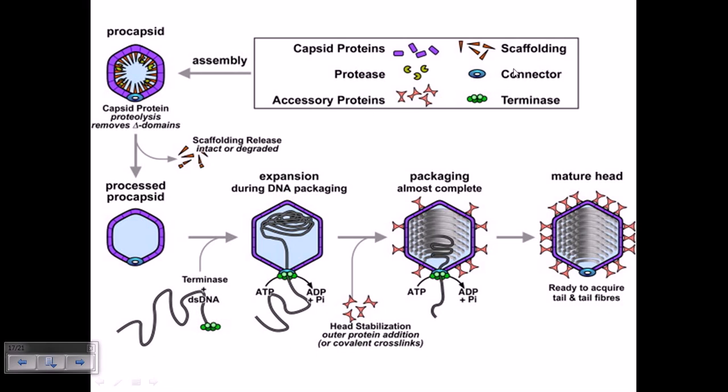accessory proteins, and scaffolding proteins. These three proteins are major and most important for giving structural property to the bacteriophage. We also require connector proteins, proteases, and terminase to help guide the process.